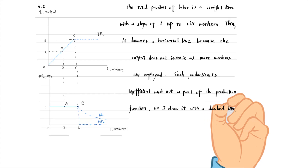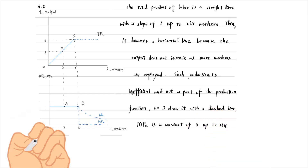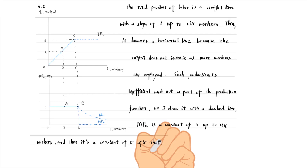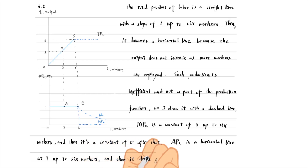The marginal product of labor is a constant 1 up to 6 workers, and it is a constant 0 after that. The average product of labor is a horizontal line at 1 up to 6 workers, and then it drops gradually. The marginal product of labor is the slope of the total product curve, while the average product of labor curve is the slope of the straight line connecting the origin and the point on the total product of labor curve.